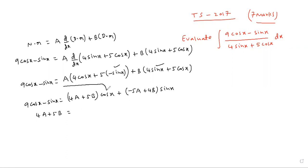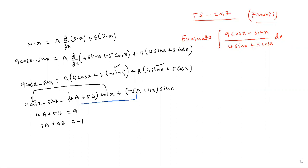Now compare both sides. Compare cosx on both sides: you get 4a plus 5b equals 9. Compare sinx on both sides: you get minus 5a plus 4b equals minus 1.